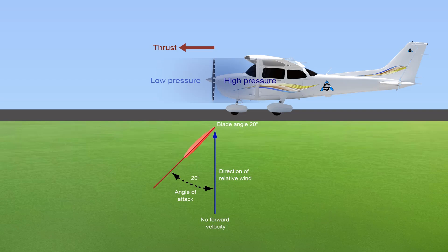For example, when a propeller rotates on a stationary aircraft, the direction of the relative wind is exactly opposite to the rotational movement of the propeller. In this case, the angle of attack is the same as the propeller blade angle.